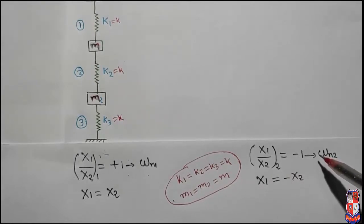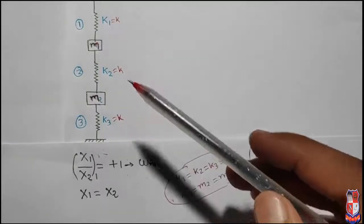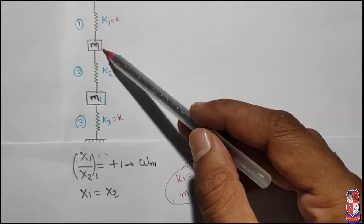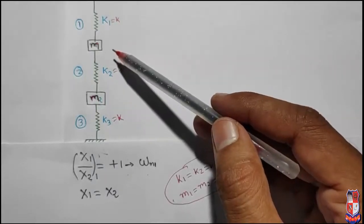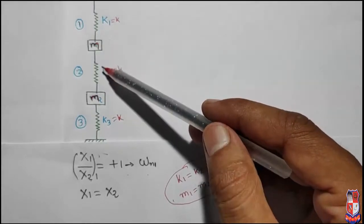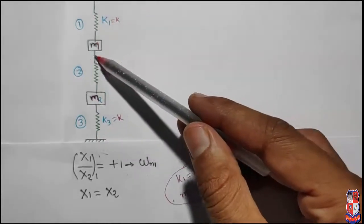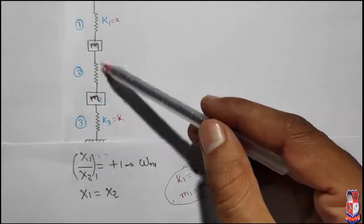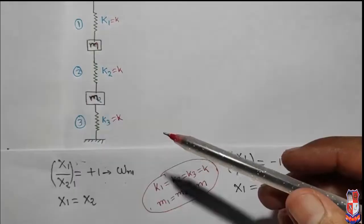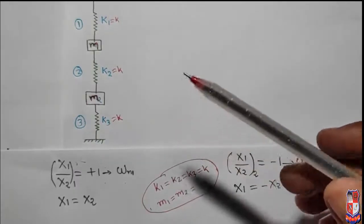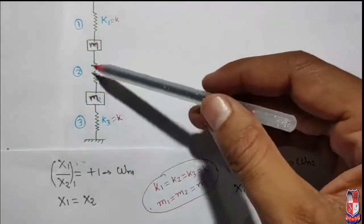In case 1, both the masses have the same amplitude and are moving in the same direction. If mass m1 moves with some distance in the upward direction, then mass m2 also moves with the same distance in the upward direction. Similarly, if m1 moves downward, m2 also moves downward. This means spring k2 will move with both masses like a rigid body — there is no compression or tension in spring 2, meaning there is no deflection in spring 2. Spring 2 will not play any role in the vibration of the system.